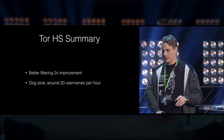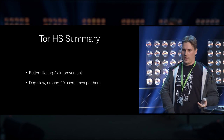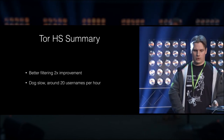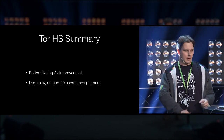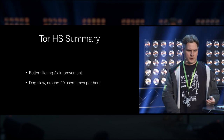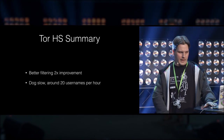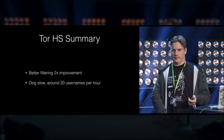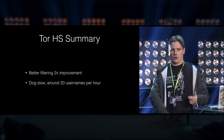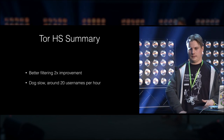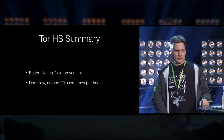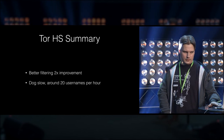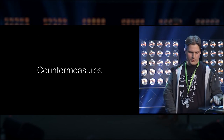Since Tor hidden service connections are slow to make, this is dog slow. According to my calculations you can enumerate about 20 usernames per hour — not really fast. Also worth noting: this is really noisy, so you can detect it from log files. If you look at your logs you'll see a huge number of authentication attempts, which indicates a probable timing attack or someone doing something really stupid.